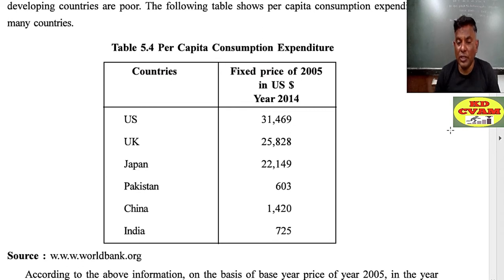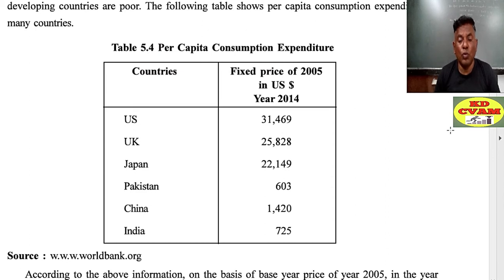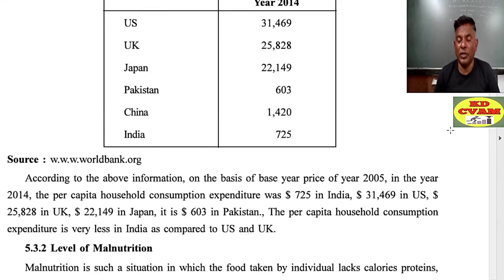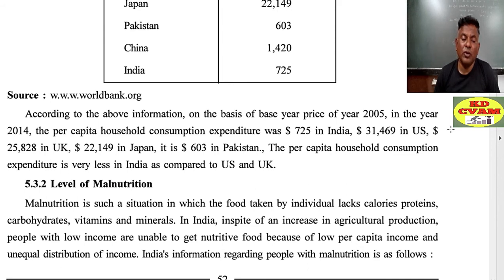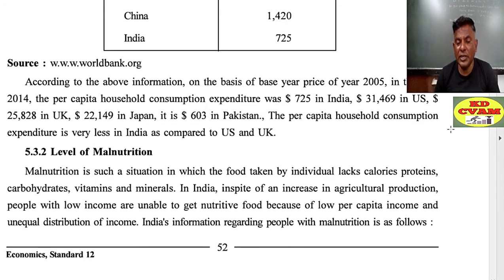The following table shows per capita consumption expenditure at fixed prices of 2005 in US dollars for the year 2014. As per the data, per capita household consumption expenditure was $725 in India, $31,469 in the US, $2,528 in the UK, $22,149 in Japan, and $603 in Pakistan. The per capita household consumption expenditure is very less in India as compared to the US and UK.